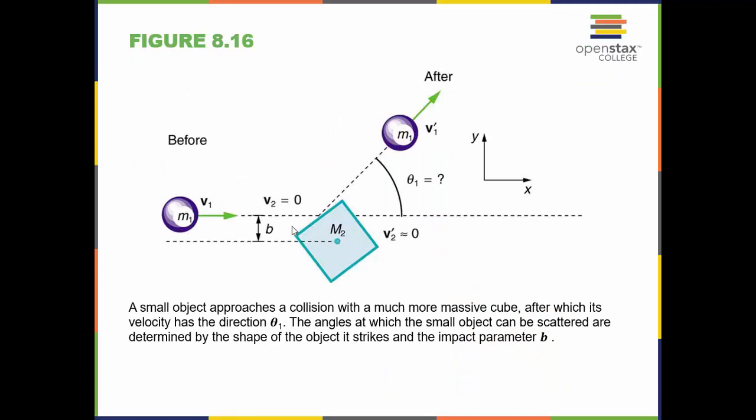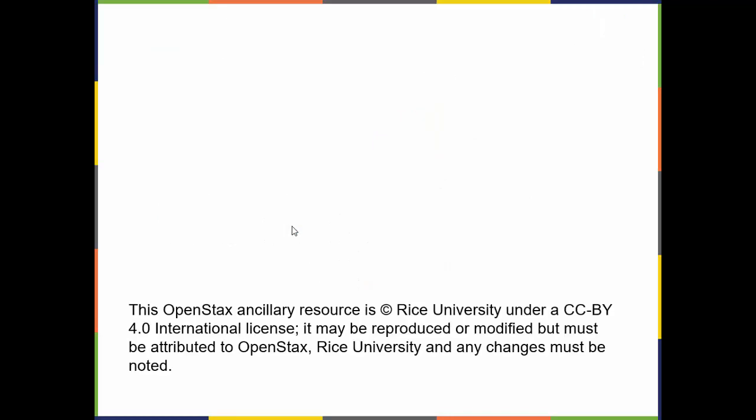We can find out a lot about materials such as crystals by firing objects into them. A small object approaches a collision with a much more massive cube, and after the collision its velocity has a direction theta 1. The angles at which the small object can be scattered are determined by the shape of the object it strikes and the impact parameter. In lecture, we'll talk more about momentum.